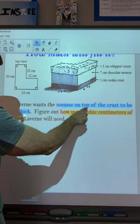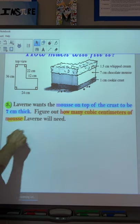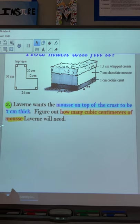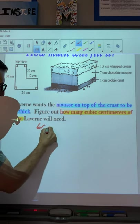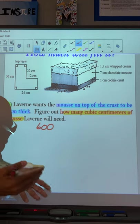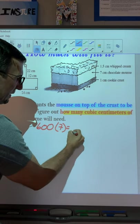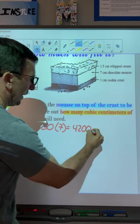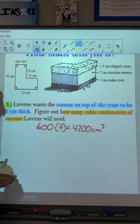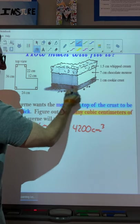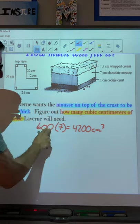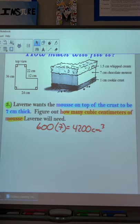So Laverne wants the mousse on the top of the crust to be seven centimeters thick. So we've got to figure out how many cubic centimeters of mousse Laverne will need. So she wants it seven centimeters thick. So how much mousse is that going to take to fill that whole area? So remember that the bottom layer was 600. So if we wanted seven centimeters thick, what do you think we need to do? Oh, good job, Corbin. Yes, just multiply by seven. So we have 600 times 7. So we have 4,200 cubic centimeters. And that's it. Pretty easy. So again, this one layer is 600 cubic centimeters, but I need seven centimeters of it. So you take 600 times seven.